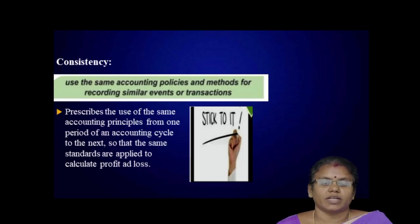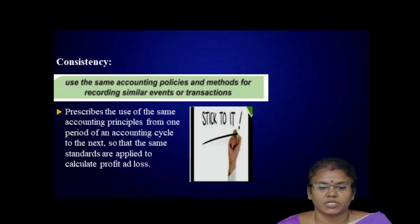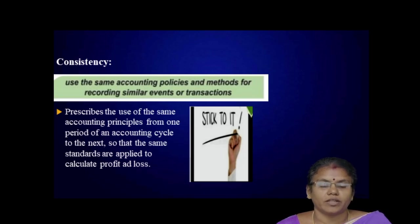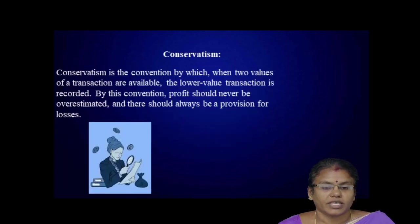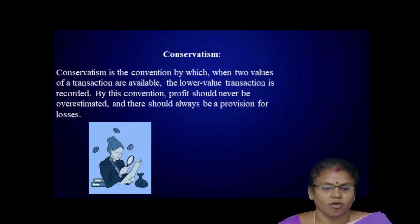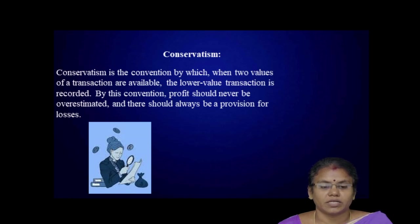First, consistency: use of the same accounting policies and methods for recording similar events or transactions. It prescribes the use of the same accounting principles from one period to the next, so that the same standards are applied to calculate profit and loss. Second, conservatism: when two values of a transaction are available, the lower value is recorded. By this convention, profit should never be overestimated and there should always be provision for losses.